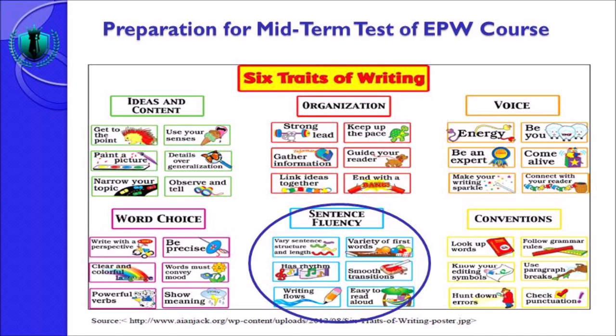Jadi jangan monoton seperti: 'I go to the zoo, I met with my friends, my friends met me, we talk, we saw animals, we sit together, we have fun, we go home.' Kalau seperti itu tulisannya sangat membosankan. Yang keempat, smooth transition — remember, paragraf harus memiliki unity, cohesion and coherence. Jadi transisi per kalimatnya harus smooth, harus licin.